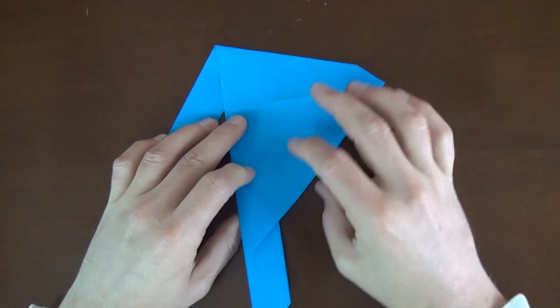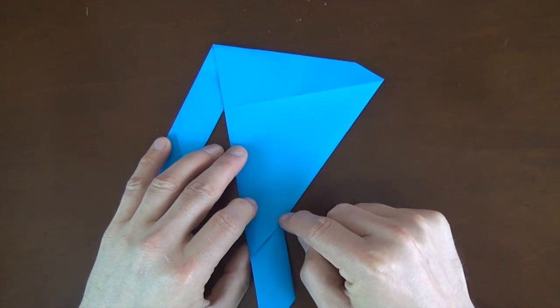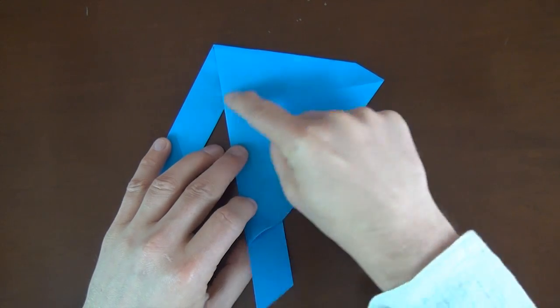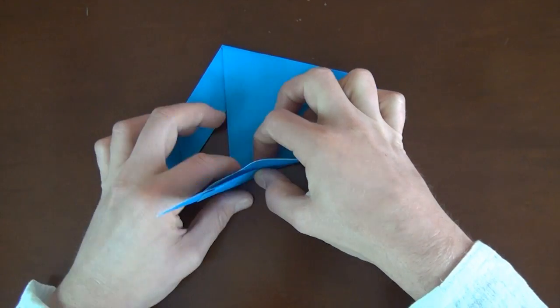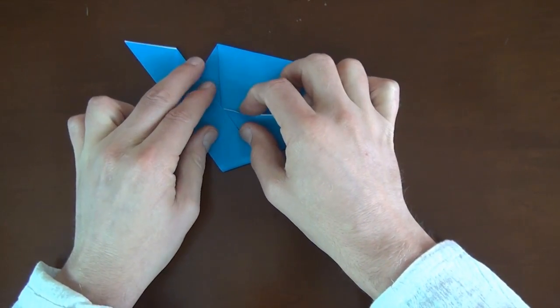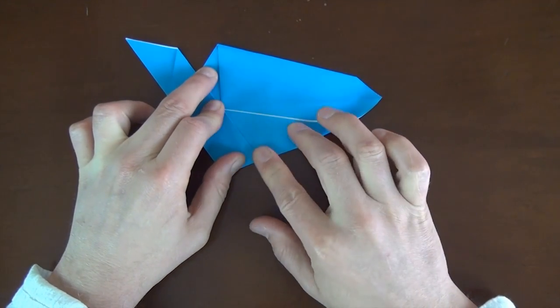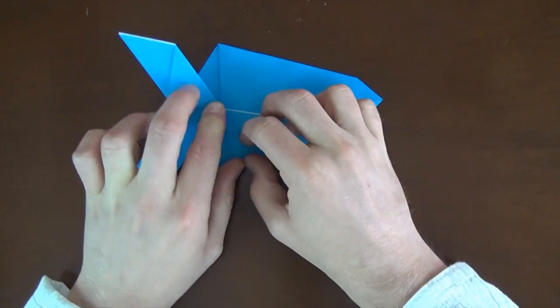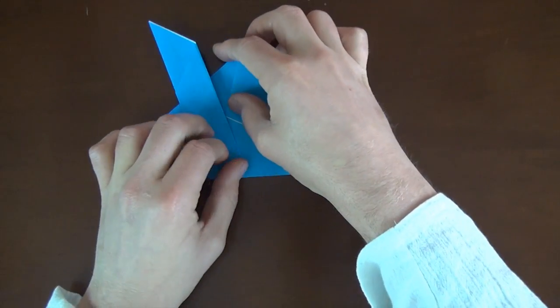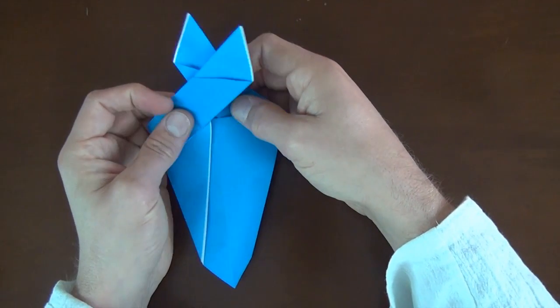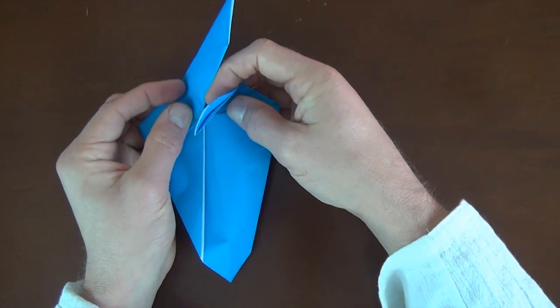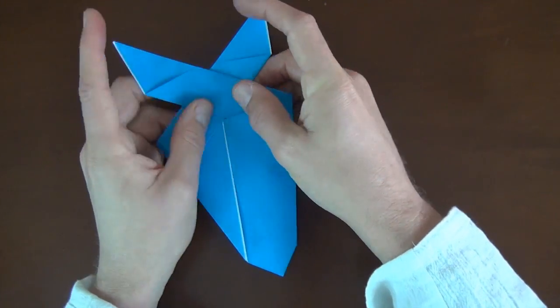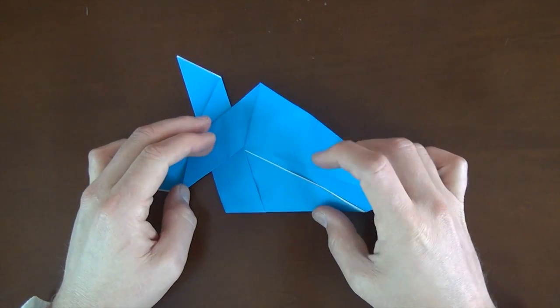Now let's turn over. And now we're going to do the same thing. We're going to fold this point to right here. And now we're just going to switch these flaps like that so that one's on top.